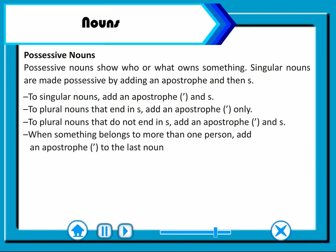Possessive nouns show who or what owns something. To singular nouns, add an apostrophe and then 's'. To plural nouns that end in 's', add an apostrophe only. To plural nouns that do not end in 's', add an apostrophe and 's'. When something belongs to more than one person, add an apostrophe to the last noun.